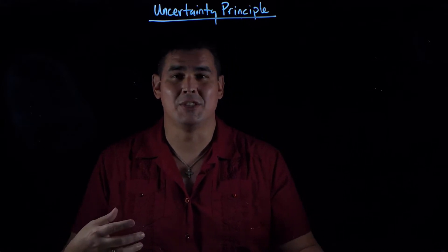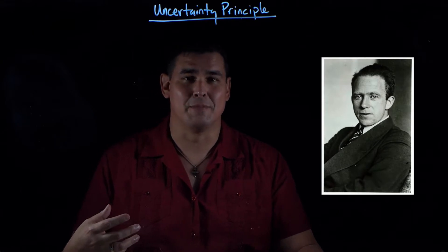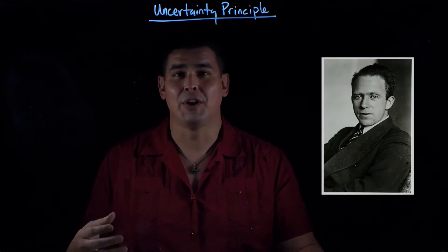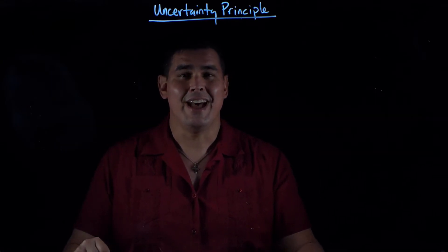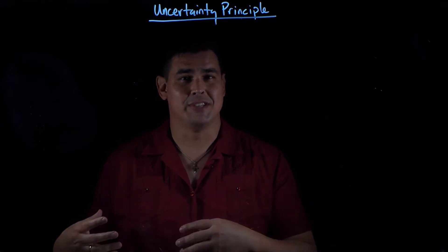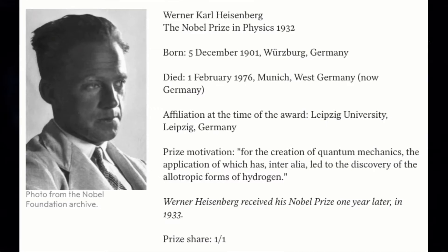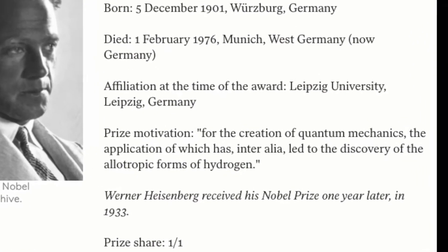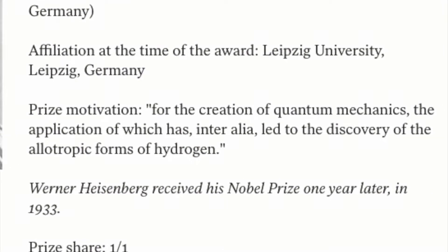It was derived in 1926 by an Austrian physicist named Werner Heisenberg, and he won a Nobel Prize later, not just for his work in matrices and describing quantum mechanics or for the uncertainty principle, but he was given the award basically for founding quantum mechanics.